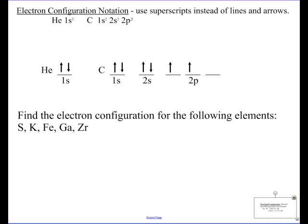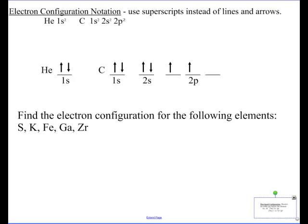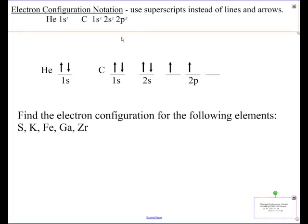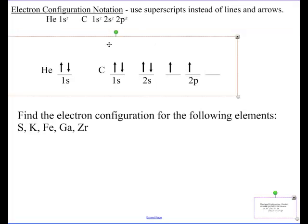The next way to represent it is called electron configuration notation, same kind of thing. Most of you will prefer this, and you'll see why in just a second. What we do is instead of writing out all these arrows, which is very tedious,